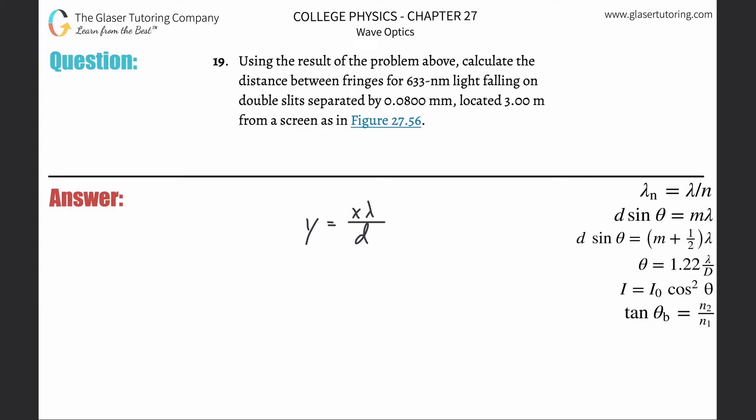Number 19: Using the result of the problem above, calculate the distance between the fringes for 633 nanometer light falling on double slits separated by 0.08 millimeters located 3 meters from a screen. So y represents the distance between the fringes.